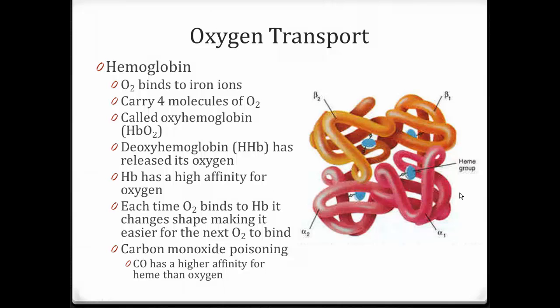In oxygen transport, oxygen is stored on hemoglobin. Hemoglobin is composed of two beta globins and two alpha globins, each with a heme inside of it. The heme has the iron, and that's where the oxygen binds. So one hemoglobin can carry four molecules of oxygen. If it carries all four oxygens, it's called oxyhemoglobin. If it releases all that oxygen, we call it deoxyhemoglobin. Hemoglobin has a high affinity for oxygen, meaning it can bind very easily and tightly with oxygen.